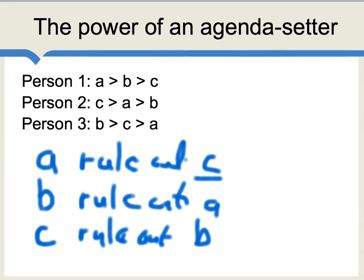There's another way you can do this exercise: rather than assuming the agenda-setter can completely rule out one option, you could say the agenda-setter simply has the power to decide the order in which we do pairwise voting. The agenda-setter could say: first we consider A against B, then the winner against C; or first B against C, then the winner against A, and so on. I leave this as an exercise to the student, but under this assumption also, the agenda-setter — by manipulating the order of votes — can produce a process which appears entirely democratic but is actually just reflecting the preferences of that agenda-setter.